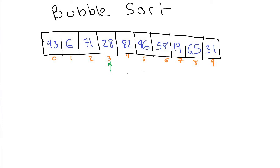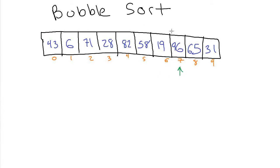Then we move on to slot four and compare the 82 to the one to the right — those aren't out of order, since 82 should be before 96. We move on to slot five and compare the 96 with the one to the right and find they are out of order, so we swap them. Then slot six: the 96 is out of order with the one to the right, so we swap. We move to slot seven, again find they're out of order, so we swap. Then slot eight: compare to slot nine, find they're out of order, swap. That leaves us at slot nine, and we stop because there's nothing to the right of it.